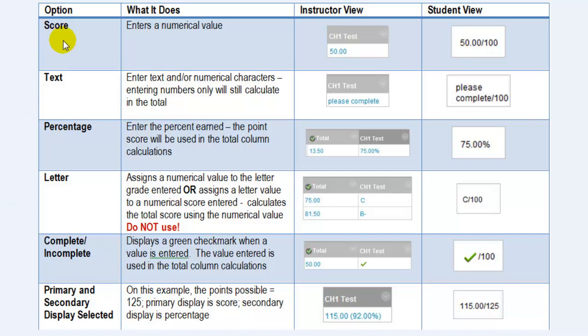When you select score, you're going to enter a numerical value and that is what you see in the instructor view and the student view. The student view also shows the points possible.